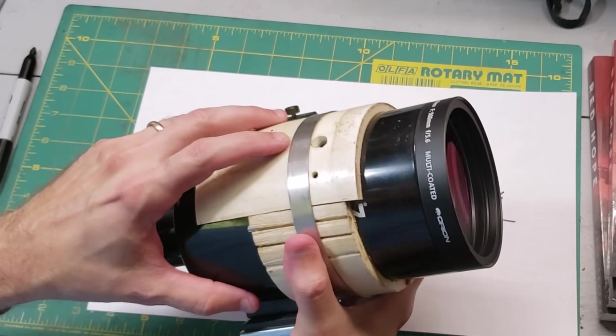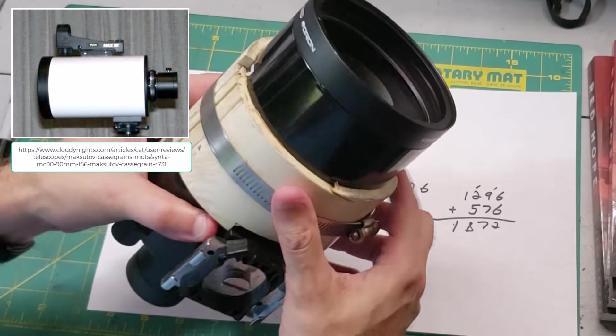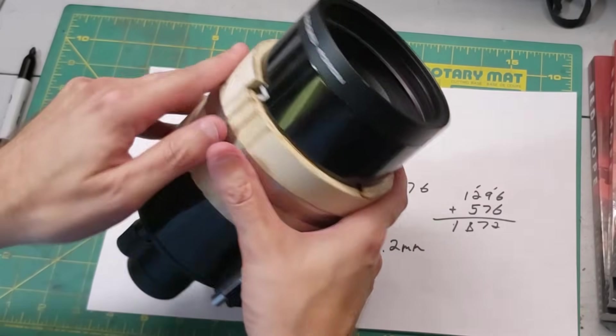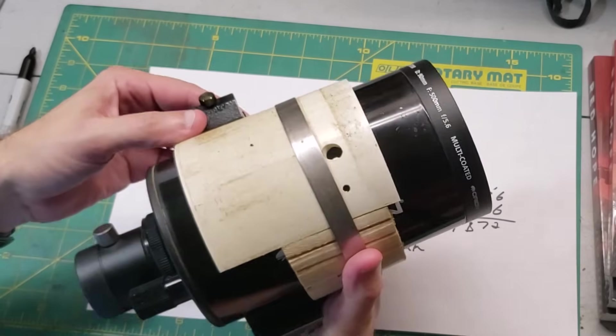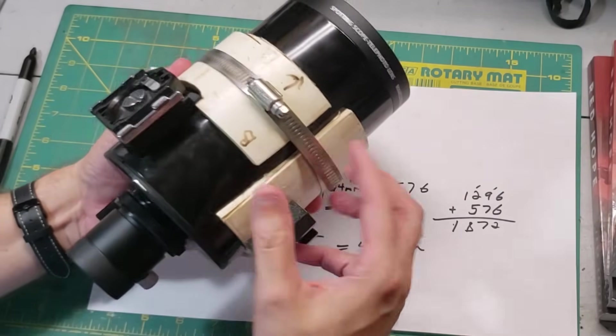Orion sold a version and another company called Senta, and they sold it as the Senta MC90. So if you see this for sale on Cloudy Nights classifieds or eBay or anything like that, just know that they are pretty much basically the same telescope.